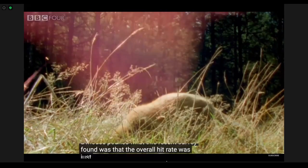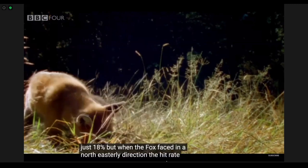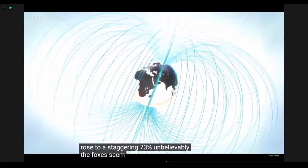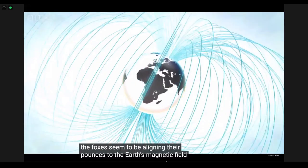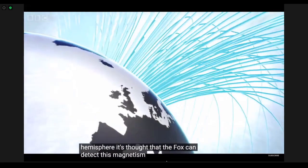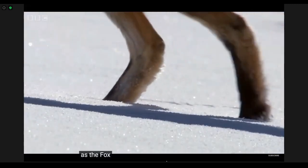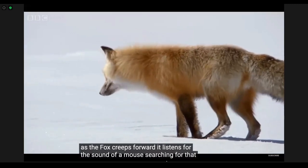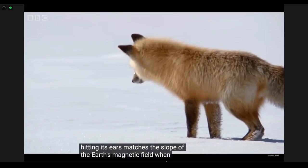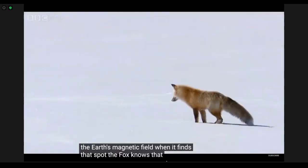It's long been known that to reach the prey beneath the snow or even in thick grass, foxes use a technique called a mouse pounce. What this recent survey found was that the overall hit rate was just 18 percent. But when the fox faced in a northeasterly direction, the hit rate rose to a staggering 73 percent. Unbelievably, the foxes seem to be aligning their pounces with the earth's magnetic field, which tilts downward in the northern hemisphere. It's thought that the fox can detect this magnetism. As the fox creeps forward it listens for the sound of a mouse, searching for that sweet spot where the angle of the sound hitting its ears matches the slope of the earth's magnetic field. When it finds that spot, the fox knows that the prey is a fixed distance away and it can calculate exactly how far to jump to land right on top of it.